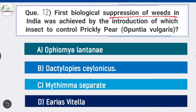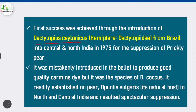Question 12: The first biological suppression of weeds in India was achieved by the introduction of which insect to control prickly pear (scientific name Opuntia vulgaris)? Option B is correct: Dactylopius ceylonicus. The first success was achieved through the introduction of Dactylopius ceylonicus, order Hemiptera, family Dactylopiidae, from Brazil into central and north India in 1975 for the suppression of prickly pear. It readily established on Opuntia species, its natural host, and resulted in spectacular suppression.